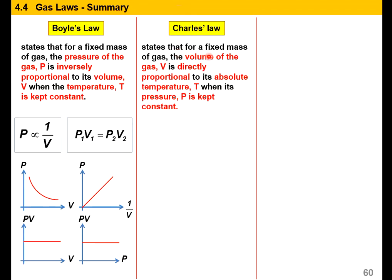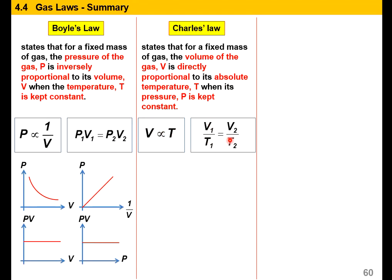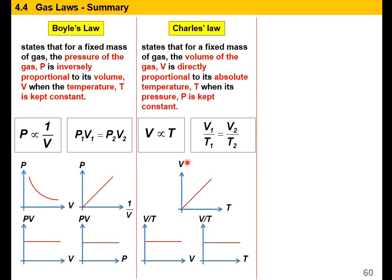Charles' Law states that for a fixed mass of gas, the volume of the gas V is directly proportionate to its absolute temperature T when its pressure P is kept constant. Please remember: absolute temperature means the unit uses Kelvin. So V is directly proportionate to T, or V1 over T1 equals V2 over T2. For the graph, volume versus temperature in Kelvin is directly proportionate, but if the unit is in degrees Celsius, the x-intercept will be at negative 273.